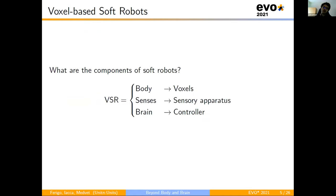But what are the components of soft robots? Like living organisms, we can divide the soft robot into three parts. The body, in our case the voxels, the sensors that are represented by the sensory apparatus, number, position, sensor in the robot, and the brain, which is the controller that takes in input the sensor readings and makes the body move.